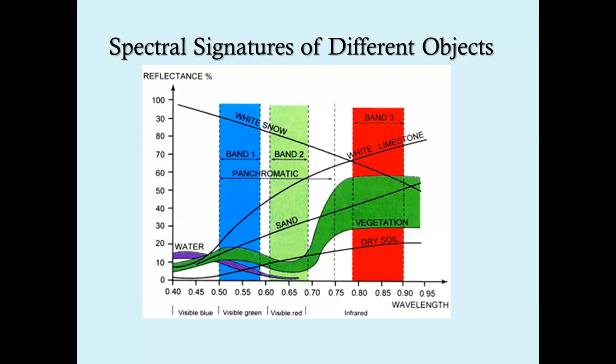Band two is shown in green, was collected in the visible red, and band three is actually collected in the infrared portion of the electromagnetic spectrum, and is represented here in the color red.